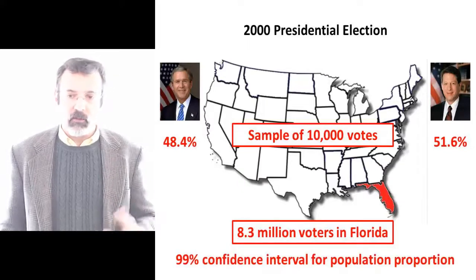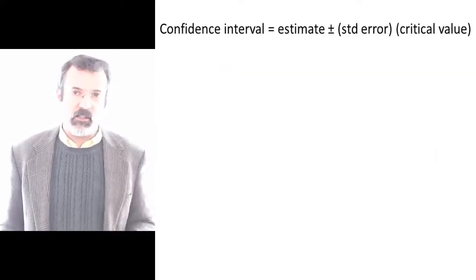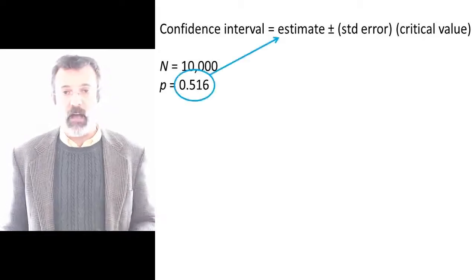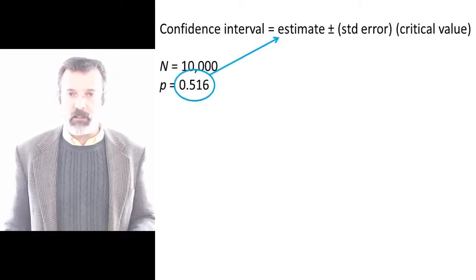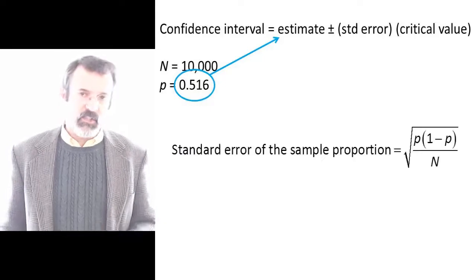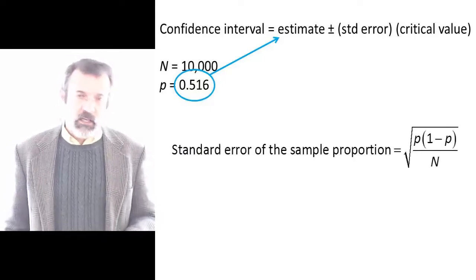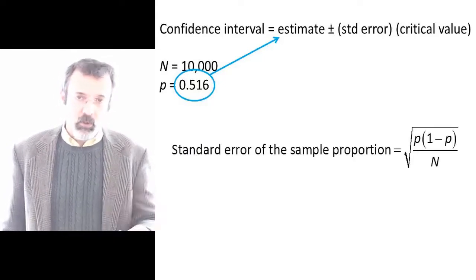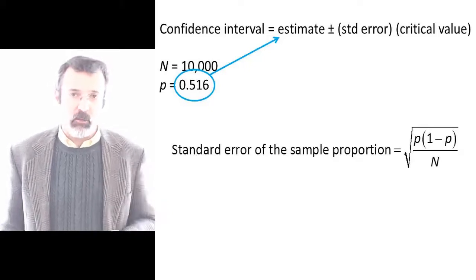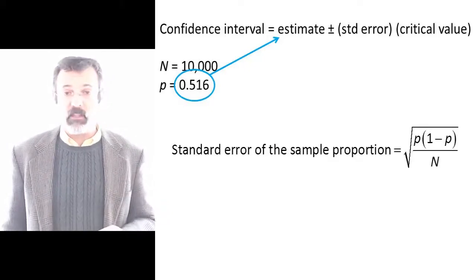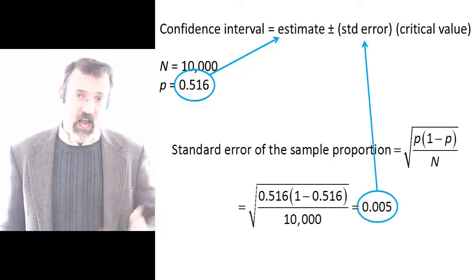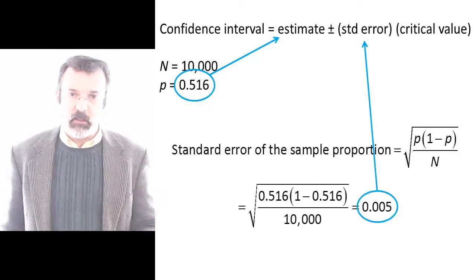Our confidence interval is the estimate — in this case the sample proportion of votes going to Al Gore, or 0.516 — plus or minus the standard error of the estimate. The standard error of a proportion is the square root of the proportion times one minus the proportion, divided by the number of observations in the sample, which in this case is 0.005.